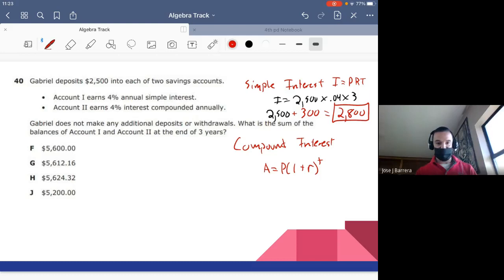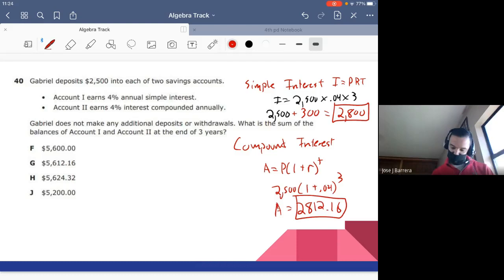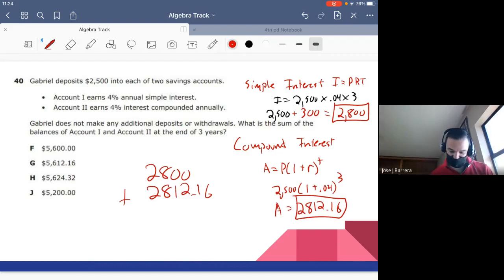The compound interest, and guess what? We just literally need to solve the formula, and it already added it for us. Principle is 2,500. Our rate is 1 plus the rate of 0.04, and the time is three years. So plug this formula into your calculator. 2,500, open parentheses, 1 plus 0.04, close parentheses, to the exponent of three. Our response is 2,812.16. So we have to add up our responses. 2,800 plus 2,812.16. And we get 5,612.16. This is the end of our most missed questions review.